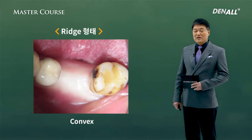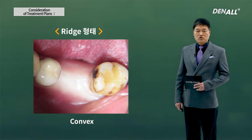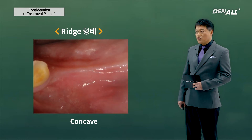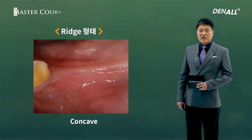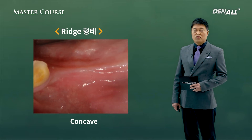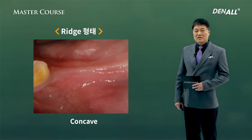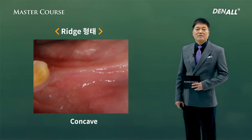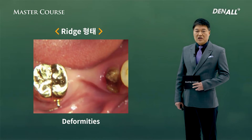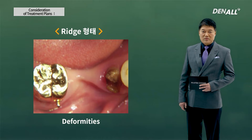Regarding ridge shape: if there is sufficient space and attached gingiva, surgery can be done without concern — very easy. But a lot of times it is atrophied and narrow, so if there is not enough attached gingiva, GBR or free gingival graft may be needed. If there is severe deformity, we can assume that severe bone resorption has occurred and additional surgery like GBR may be required.